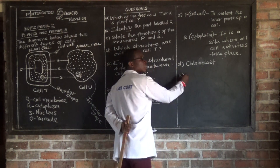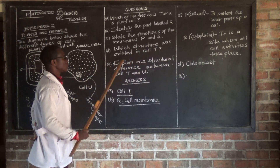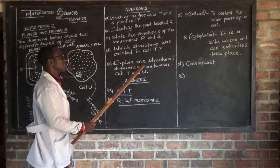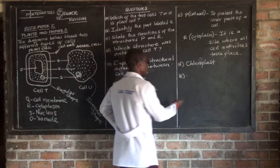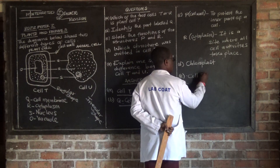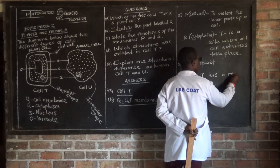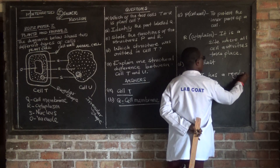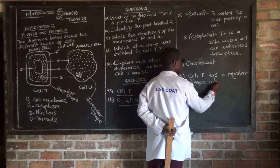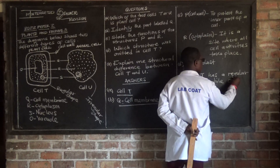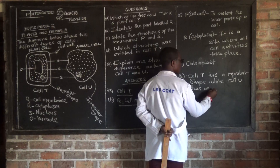Question E says: explain one structural difference between Cell T and Cell U. Cell T has a regular shape while Cell U has an irregular shape. You can also say Cell T has a vacuole while Cell U has no vacuole.